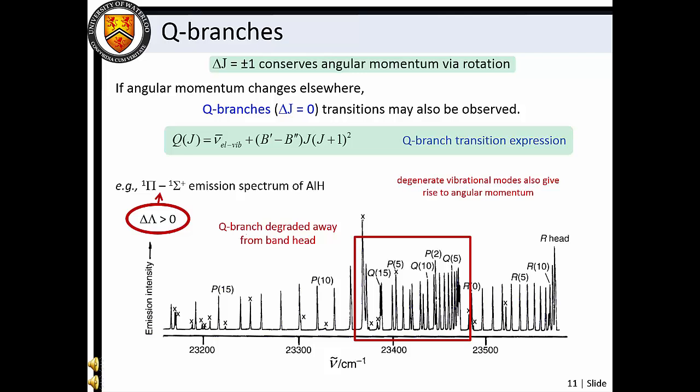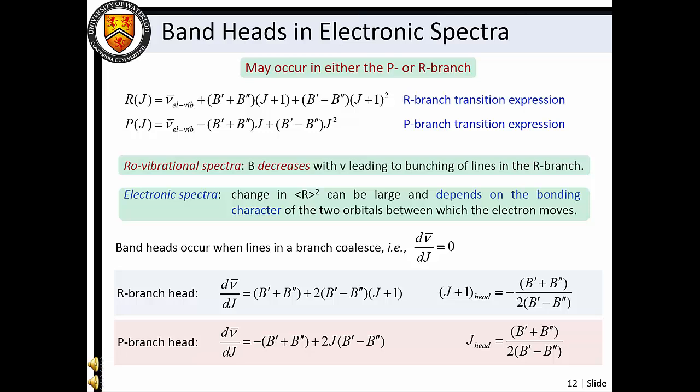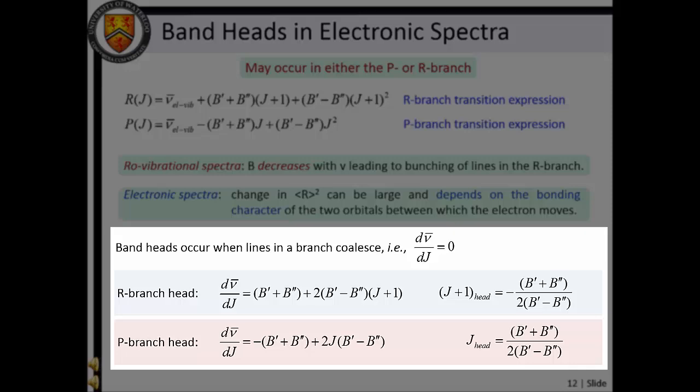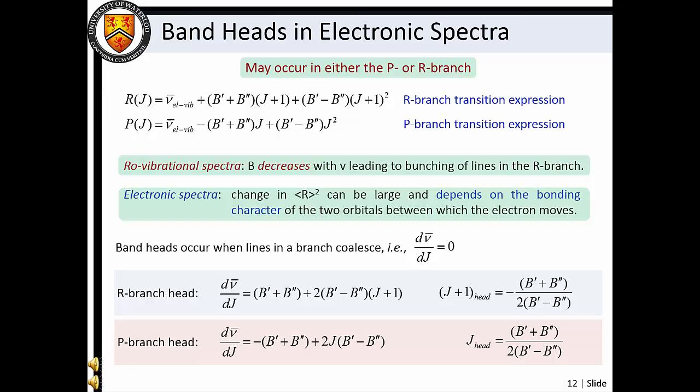Alternatively, if the excited state rotational constant is larger than the ground state rotational constant, the Q branch starts at the band origin and extends to higher frequencies. This condition would also lead to a P branch band head. In Masterclass 8, we learned that band heads always occur in the R branch for vibrational spectroscopy. This is a result of the increase in mean bond length as a function of vibrational quantum number owing to the potential energy anharmonicity. The change in mean bond length upon electronic excitation can be very large, and it depends on the difference in chemical bonding character between the two electronic states. Recall that band head formation arises when the separation between ro-vibronic transitions goes to zero. Thus, we can set the derivative of the R of J and P of J expressions with respect to J equal to zero and determine the J value at which the band head occurs. This treatment is usually accurate to within one J value.